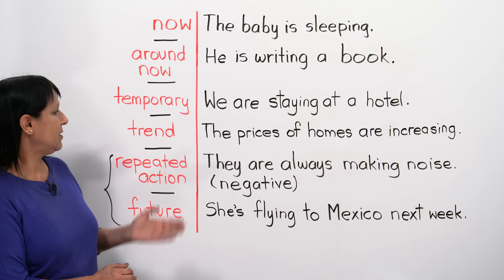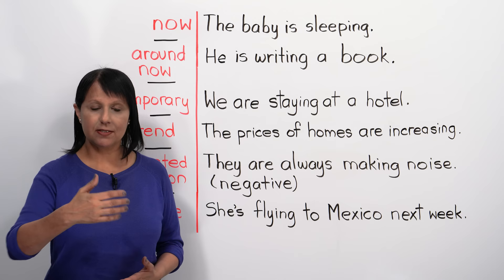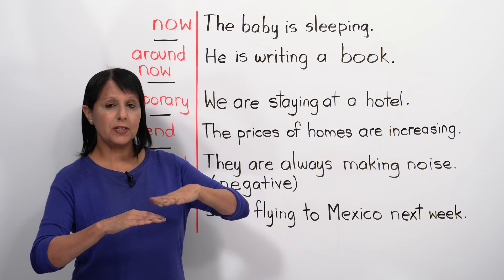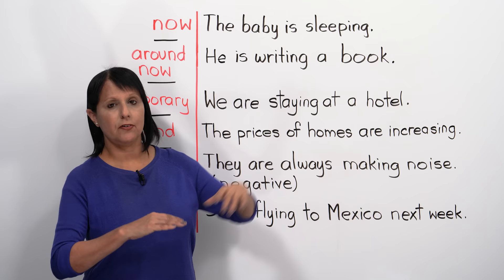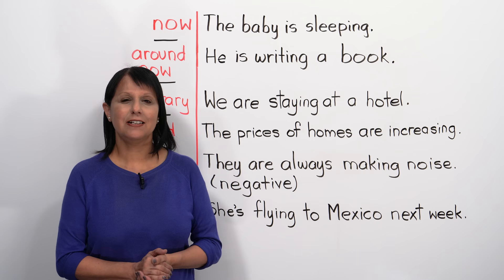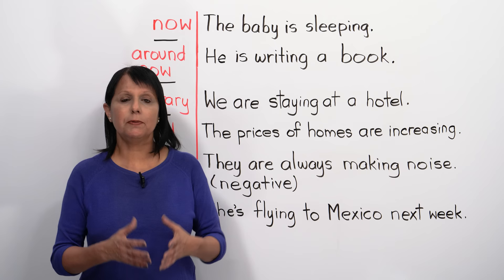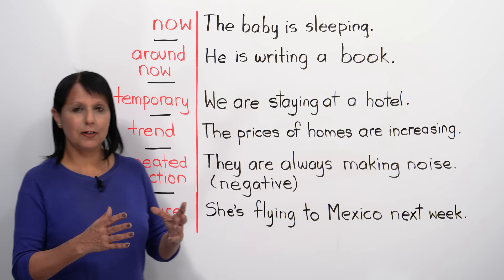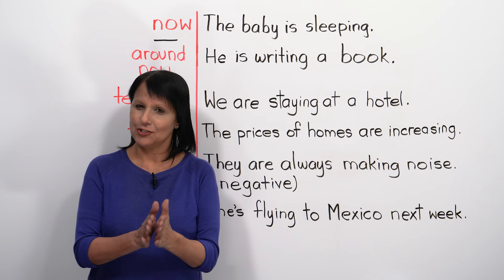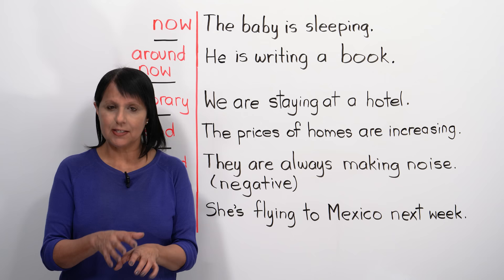Next, we can also use the present continuous to talk about a trend — something that's changing or developing. For example, 'The prices of homes are increasing.' We can also talk about a trend in terms of something that's popular. Often we talk about fashion trends — for example, 'People are wearing bright colors this summer,' or 'People are wearing certain kinds of shoes.' So we can talk about trends using this tense.